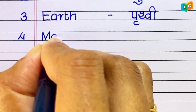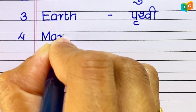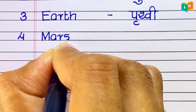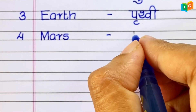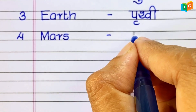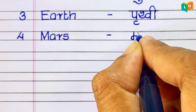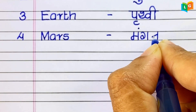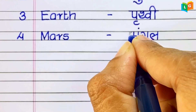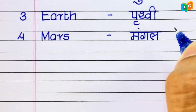Next, M-A-R-S, Mars. Mars means Mangal Graha.